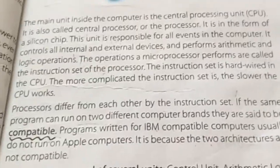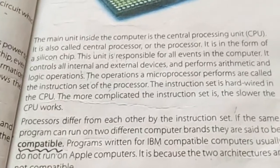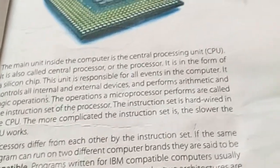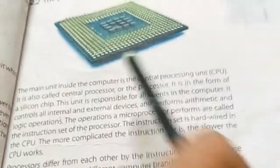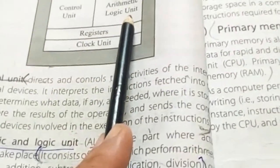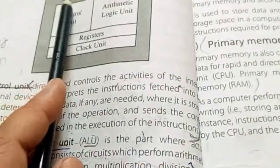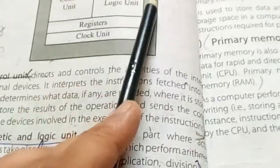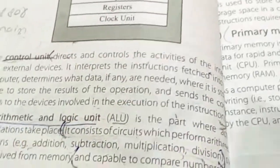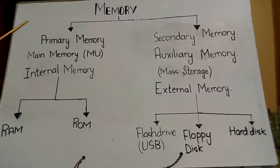Okay students, this is all about processor. So, I explained that processor is also called CPU. CPU is composed of several units: Number one, control unit. Number two, arithmetic logic unit. Registers and clock unit. This is the block diagram of CPU, meaning central processing unit.